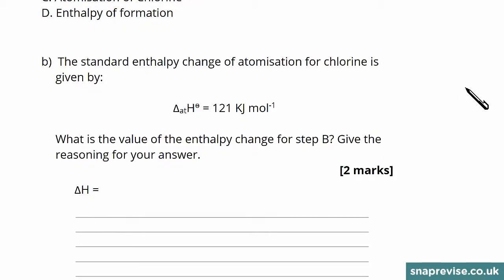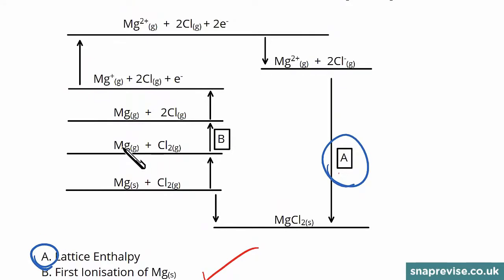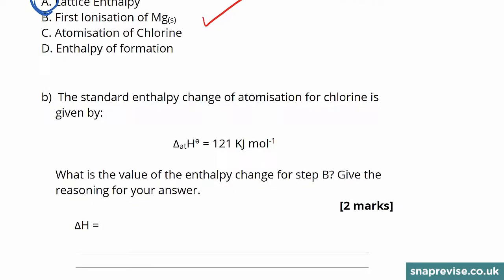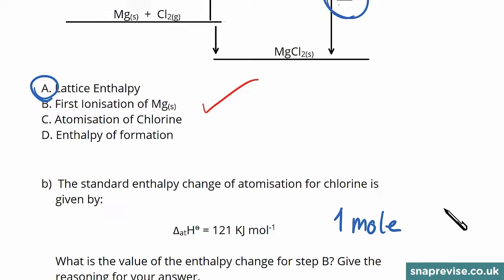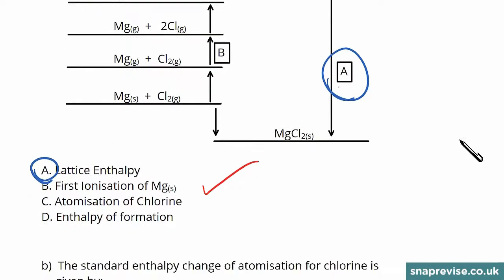What is the value of the enthalpy change in step B? Give the reasoning for your answer. If we look at step B we're going from having magnesium gas to having magnesium gas — so there's no change there — but we're going from having chlorine molecules to having just chlorine atoms separated. The enthalpy change of atomisation is the energy required to make one mole of the atoms you're after, whereas in step B we've made two moles of chlorine atoms.